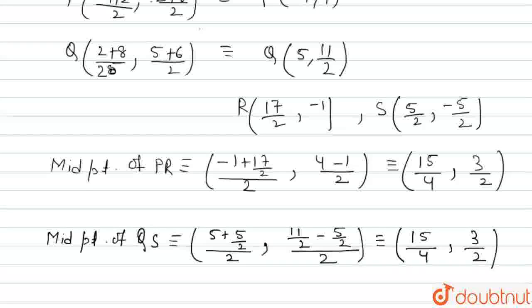We can clearly see that the midpoints of PR and QS are both coinciding at (15/4, 3/2). This means QS and PR are bisecting each other, which is the property of diagonals of a parallelogram. As PR and QS, the diagonals of quadrilateral PQRS, are bisecting each other, we can say that PQRS is a parallelogram. I hope this has answered your question and your doubt is clear. Thank you.